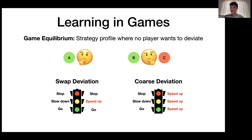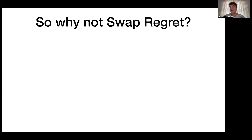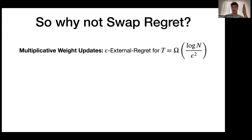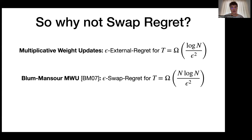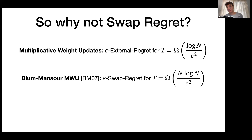So swap regret is an important notion of no-regret learning. Why isn't it more common in practice? A classic external regret algorithm like multiplicative weights requires rounds logarithmic in the number of actions N to obtain epsilon regret, whereas classic swap regret algorithms like Blum-Mansour require rounds linear in N. In modern settings — selecting neural network parameters, entire RL policies — action spaces are often exponentially large, making polynomial dependence on N a deal breaker.